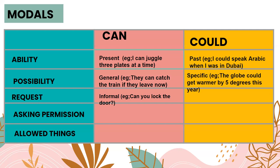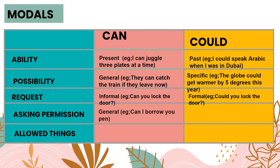Can and could are used to make requests. Can is used to make informal requests — for example: Can you lock the door? You would say this to a friend. However, could is more polite and more formal. For example, instead of saying can you lock the door, which is very informal, we can say: Could you lock the door?